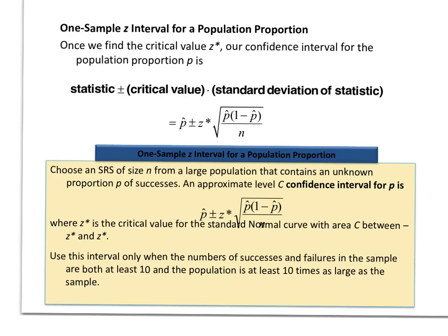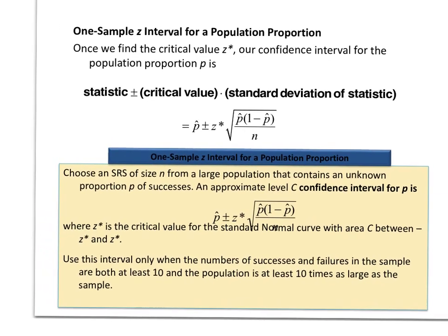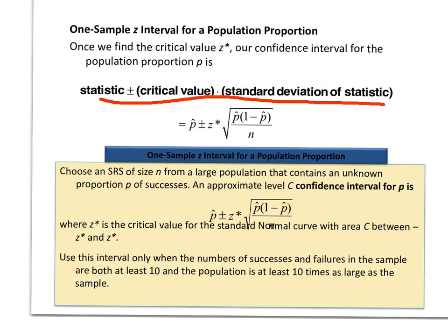When dealing with categorical data, we can take our general equation for a confidence interval and actually plug in the values that we know are going to be there for categorical. Our statistic will be p hat. Our critical value will always be z star. The standard deviation formula will involve the formula where we substitute for p, we use p hat.